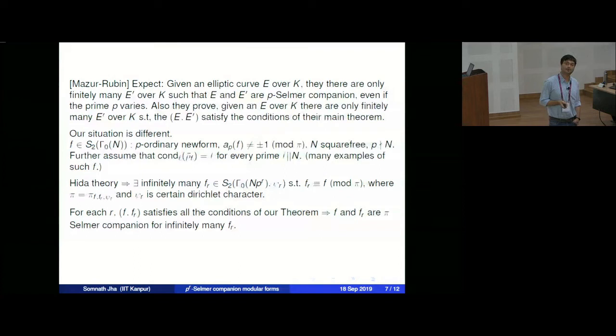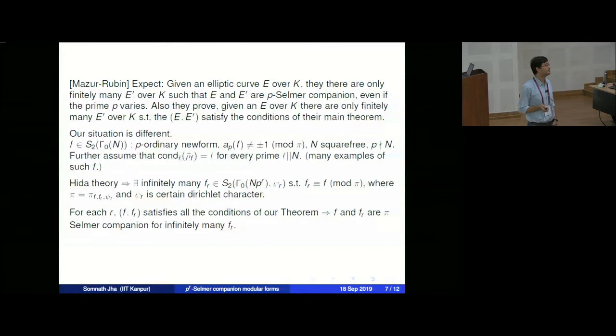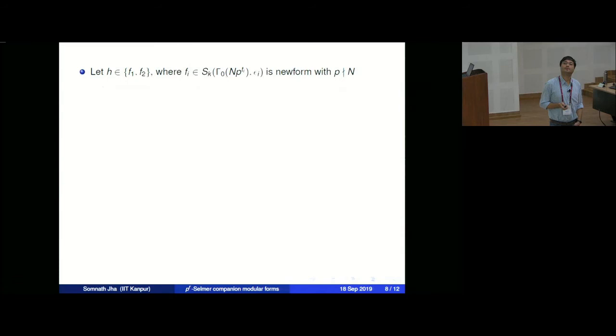For the rest of the talk, I first define how to define the Bloch-Kato Selmer group, then say a few things about the proof, and then give some numerical examples. I need to set up some notation to make sense of the Bloch-Kato Selmer group. Let H be either f_1 or f_2, where f_i is in S_k(Γ_0(Np^{T_i}), ε_i), a newform with p not dividing M.